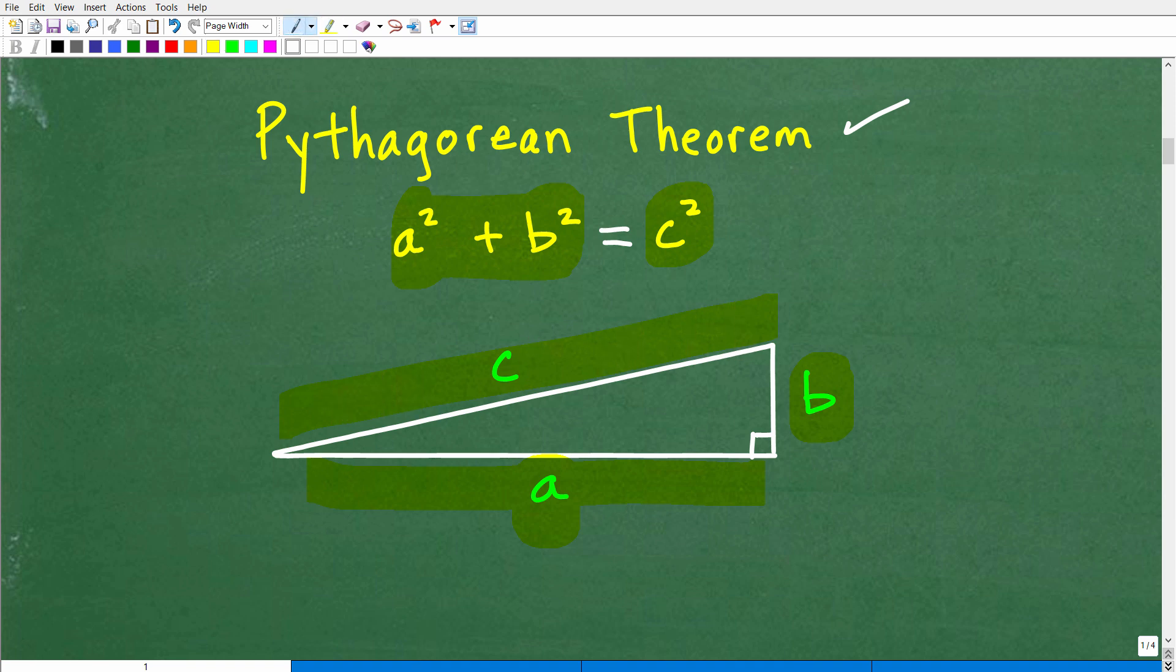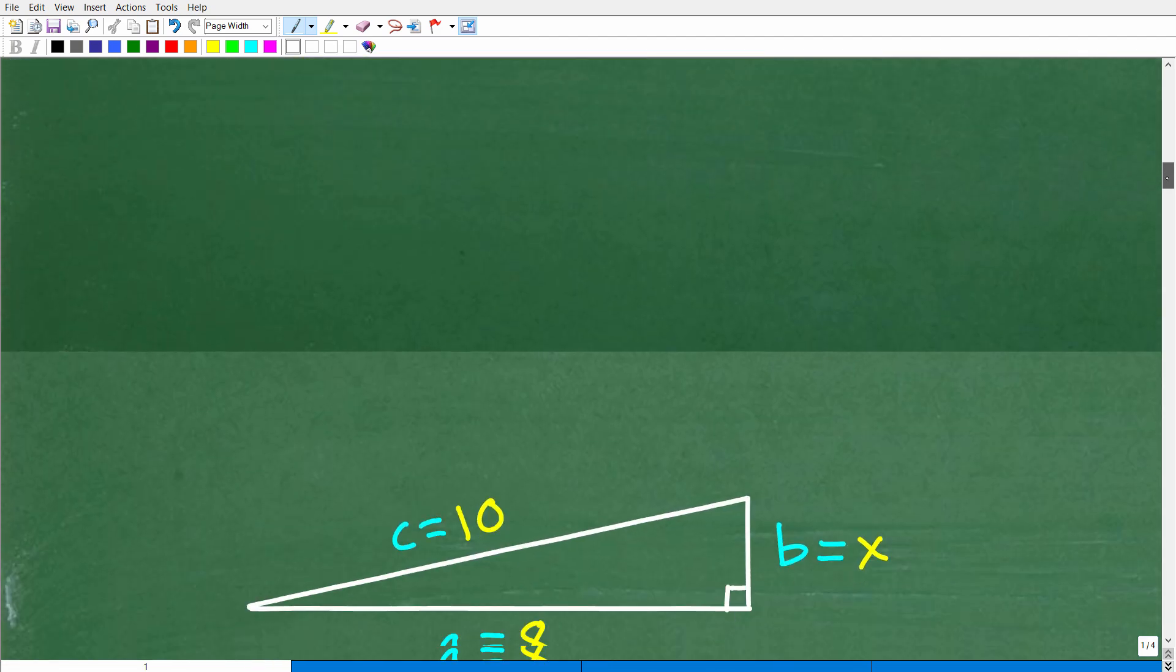So if we have a right triangle and we know the Pythagorean theorem, we can find the length of any of these sides. Of course, you're going to have to know some basic algebra, but that's not that difficult. So let's go ahead and apply the Pythagorean theorem right now to solve this problem.